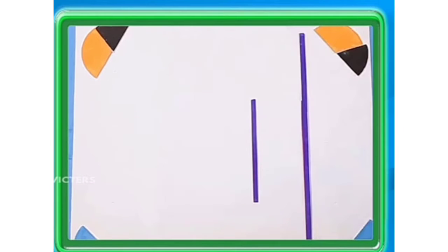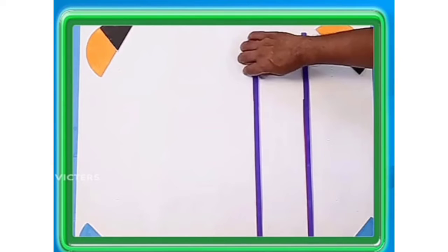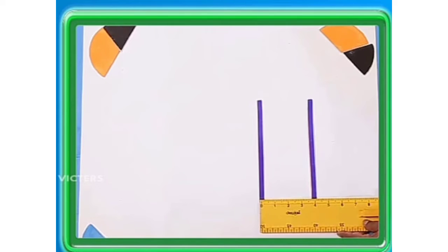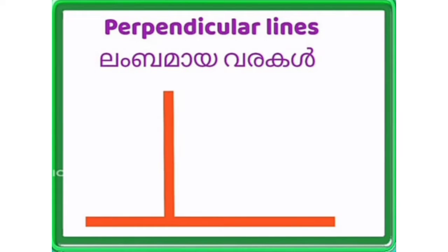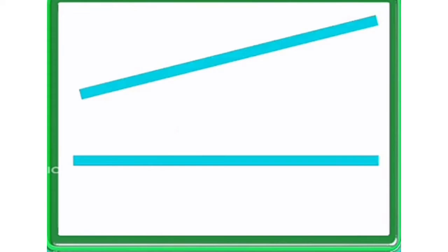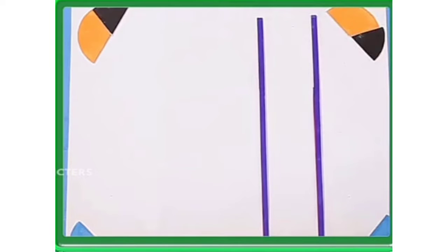We have one of the same lines to extend — it is the same distance between the two lines. Now we are learning 4 types of lines: one perpendicular line, slanted lines, horizontal lines and vertical lines.